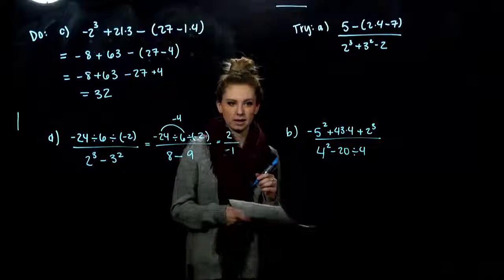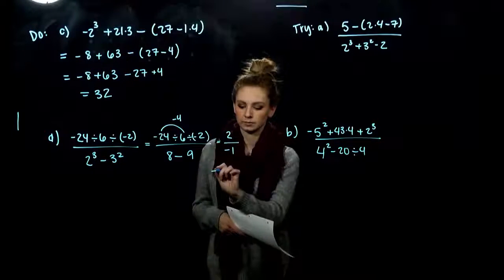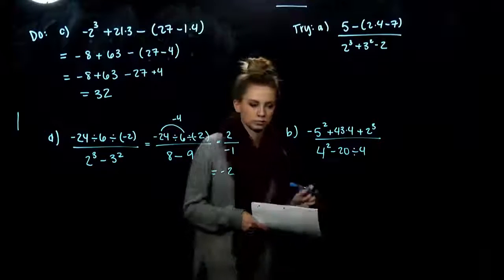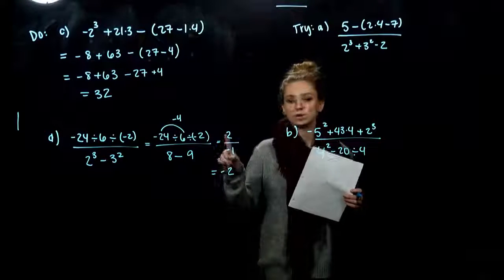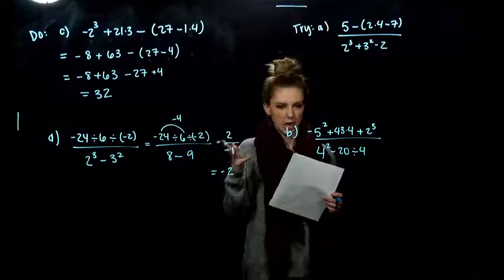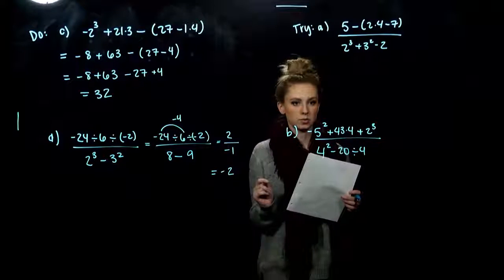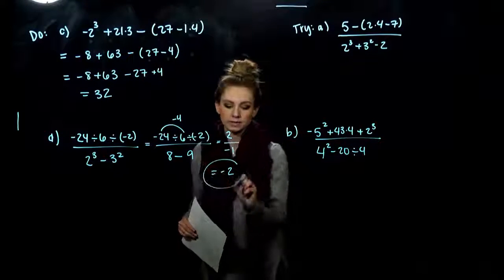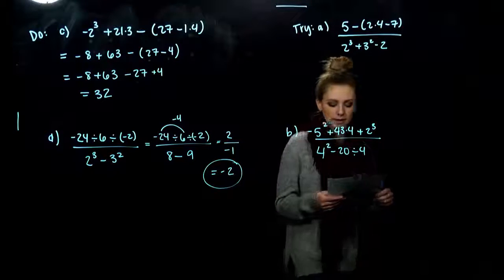So what answer are we going to have in the end? What is this equivalent to? Minus 2. Again, we can assign the negative to the top or to the bottom. Anything divided by 1 is just itself, so we can simplify to this nice form. We want to see negative numbers written like that.